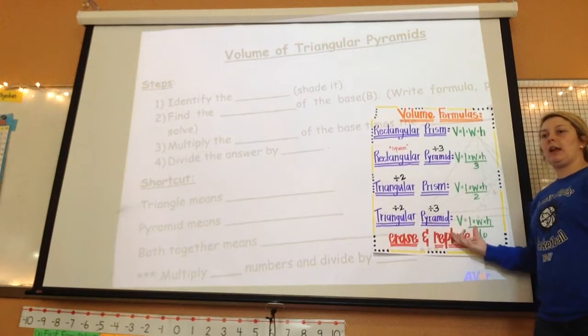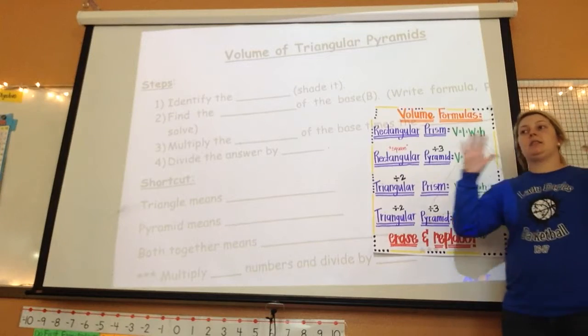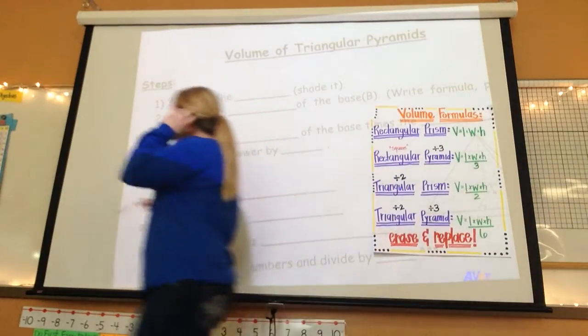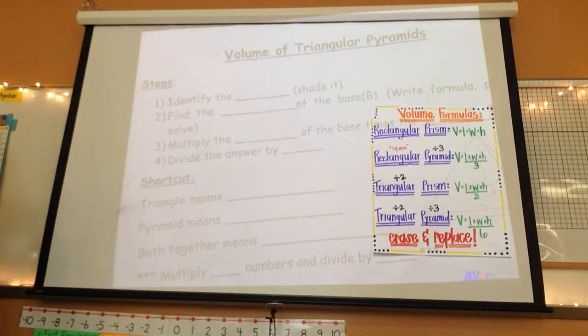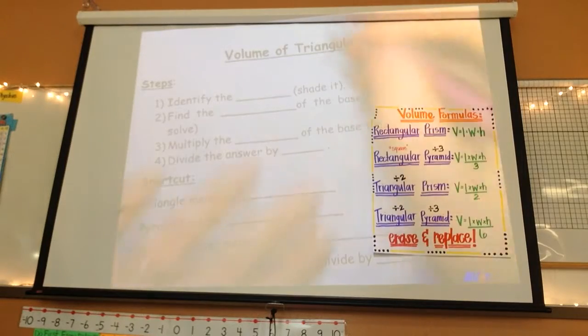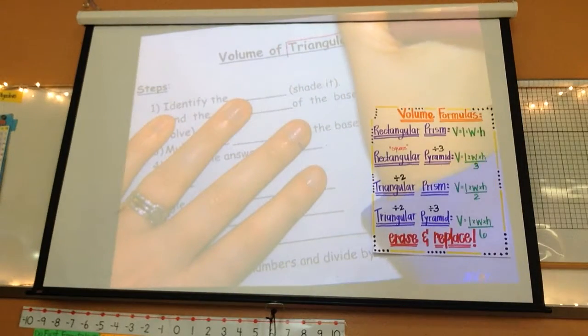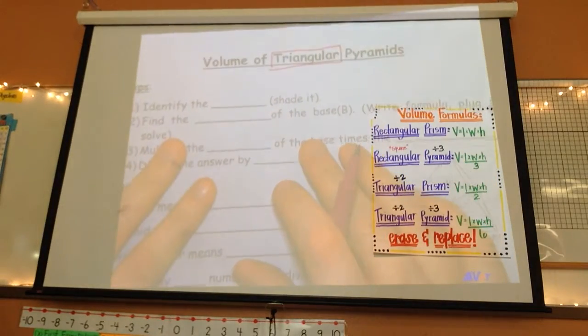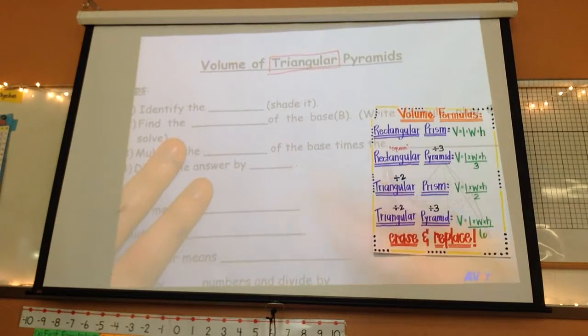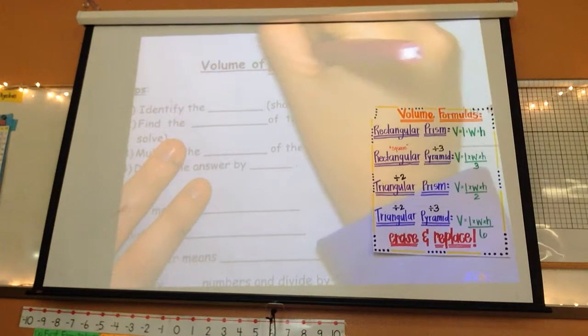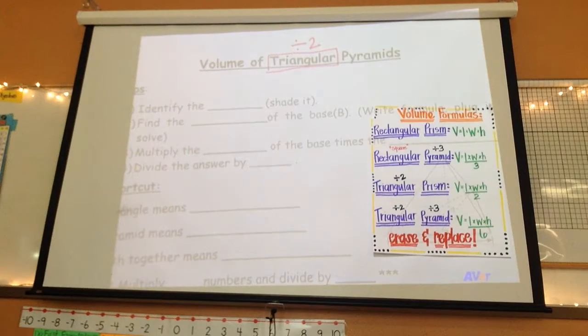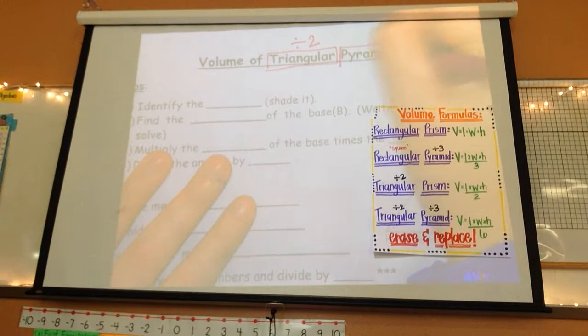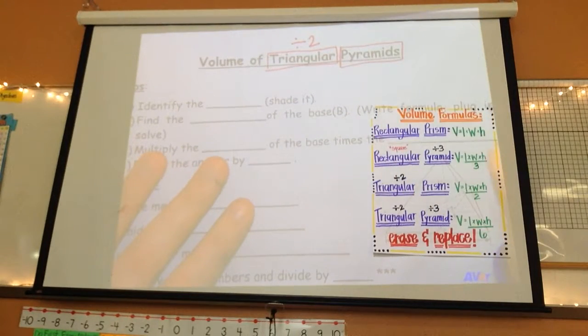So whenever we talked about using the formula chart and rewriting all the formulas before the test, this is an easy way that I can do that. So we're going to focus on these today. We're going to erase and replace. And in the last 15 or 20 minutes, you guys are going to take a five-question quiz. On your notes, I want you to put a box around the word triangle. Triangle means to divide by two. So I want to see that above the word triangle. Pyramid means to divide by three.